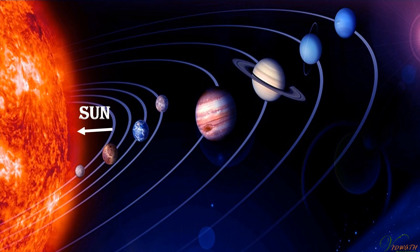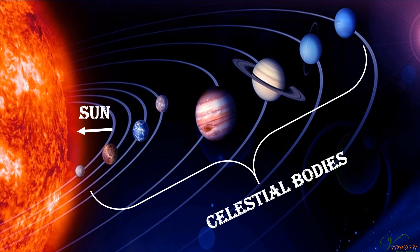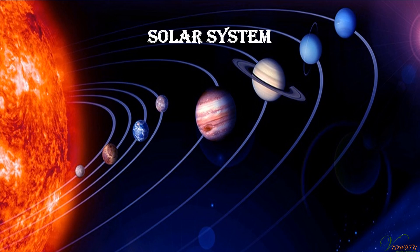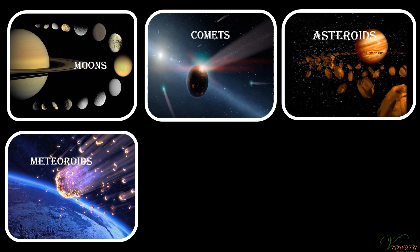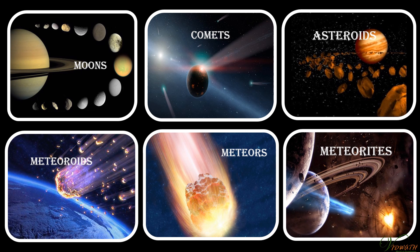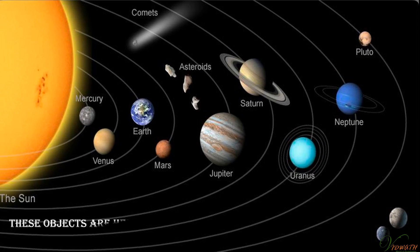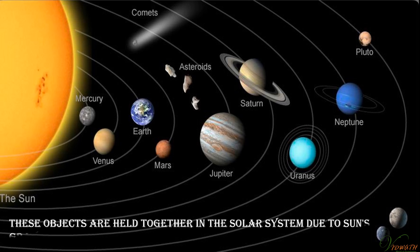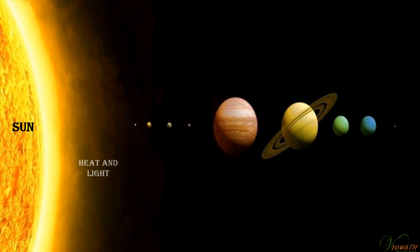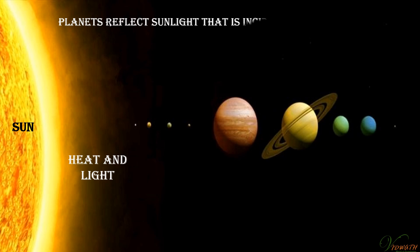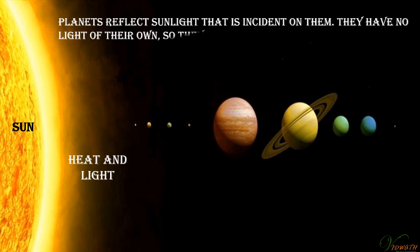The Sun and the celestial bodies that revolve around it form the solar system. It comprises a large number of bodies like planets, their moons, comets, asteroids, meteorites, and meteors. These objects are held together in the solar system due to the Sun's gravitational pull. The Sun is a major source of heat and light for all the planets. Planets reflect sunlight incident on them — they have no light of their own, so they don't twinkle like the stars.